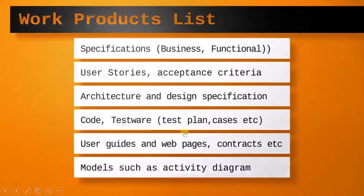Testware is nothing but test plan, test case, test procedure — any documents generated during the testing activity. Other work products include user guides, manuals, web pages, contracts with the customer, and models such as activity diagrams, flowcharts, or UML diagrams. All such diagrams also come under the work product list.